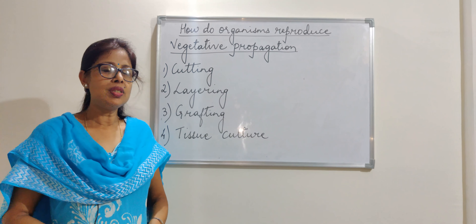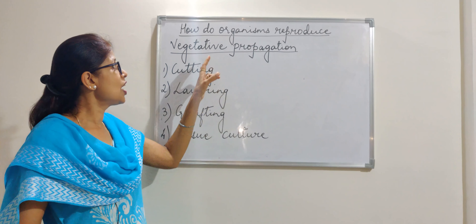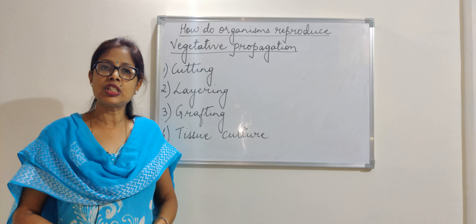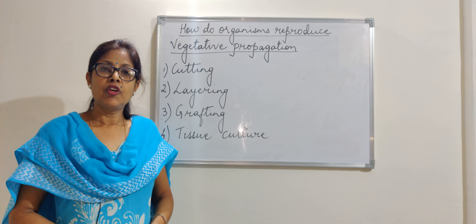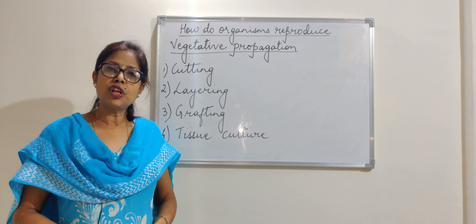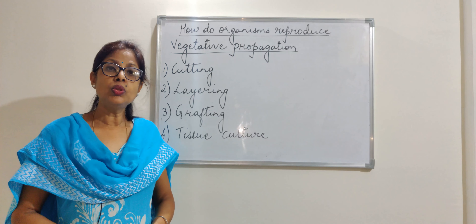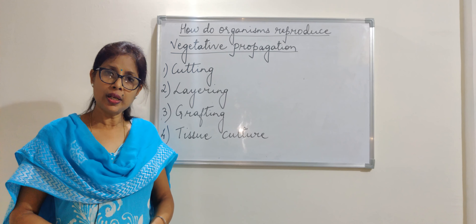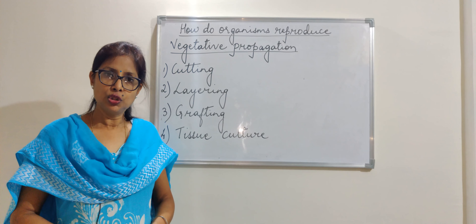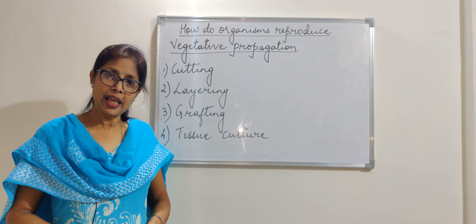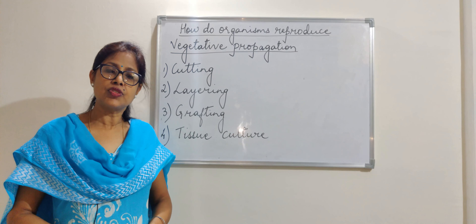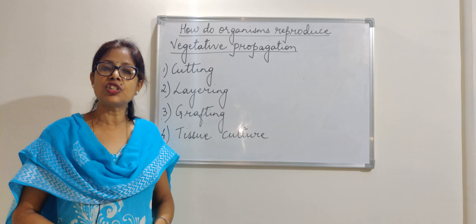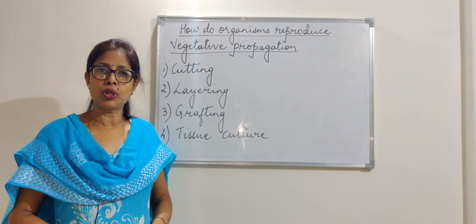Hello and welcome, students. Today we are going to learn about vegetative propagation. Vegetative refers to the root, stem, and leaves. When a plant uses any of these for reproduction, we call it vegetative propagation.